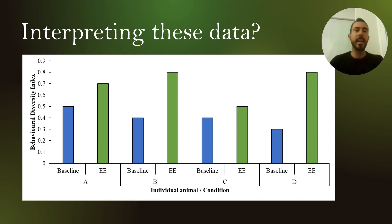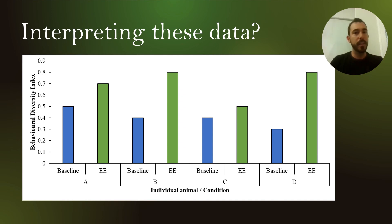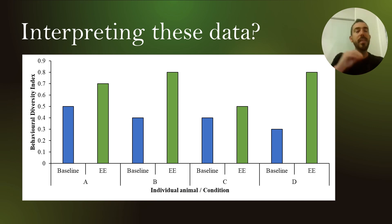Interpreting these data could be done in some form of graph per individual animal per condition that they are under. As in the case of my fictitious data, I've got a baseline for four individuals and then provided enrichment to the same individuals, and we can see a general increase in behavioural diversity with the application of environmental enrichment. You might then want to run some inferential analyses on the relevant behaviours that relate back to the increase in diversity — for example, increased time in exploration, foraging, or locomotion. Use the BDI as your descriptive statistic and then run inferential analyses on your raw behavioural data.